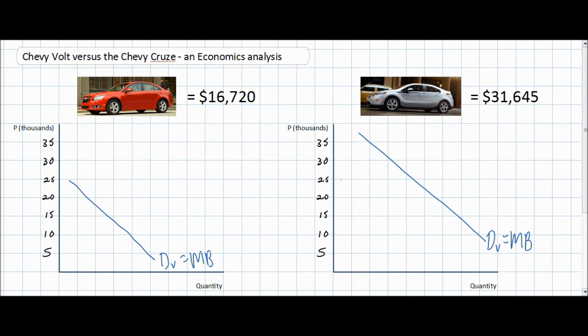This translates to a supply curve that's very far to the left in our diagram. So the supply of Chevy Volts, due to the high manufacturing costs, or the marginal costs of production, is going to be limited. It's going to be further to the left than the supply for traditional petrol-powered cars such as the Chevy Cruze.